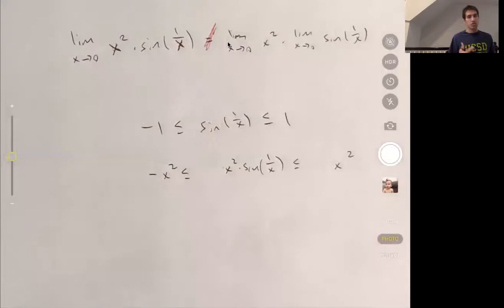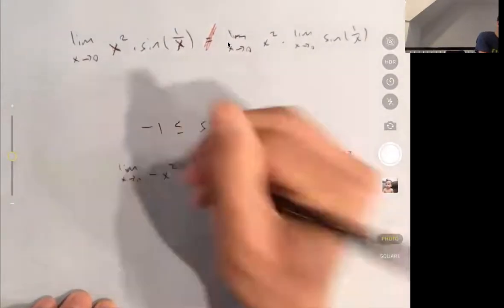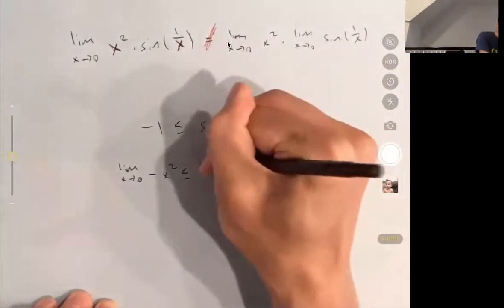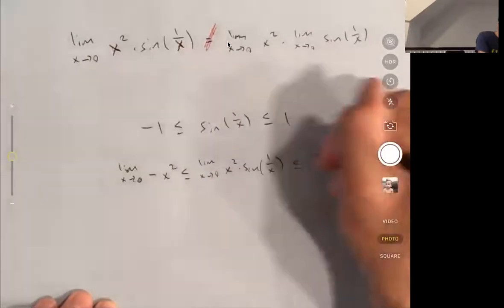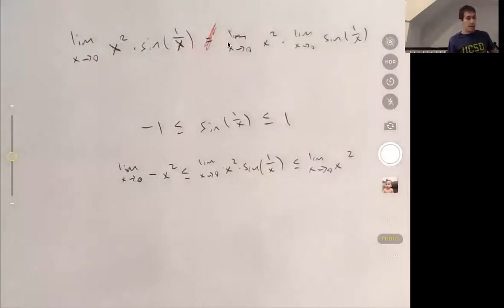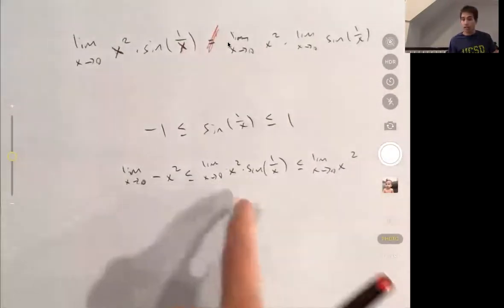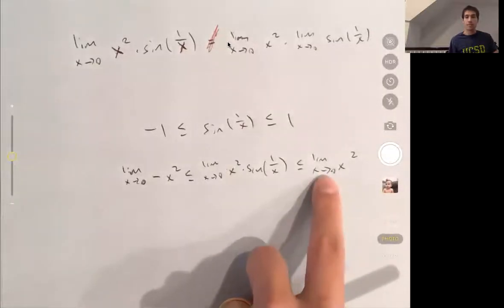And since this is true everywhere where I'm interested in, everywhere near 0, I can take the limit as x goes to 0 of everything. So this is going to be, if I just put limits in front of every one of these expressions, then the inequalities are still going to be true. So this is limit as x goes to 0 of negative x squared is less than the limit as x goes to 0 of this thing that we're interested in, which is less than or equal to the limit as x goes to 0 of x squared.